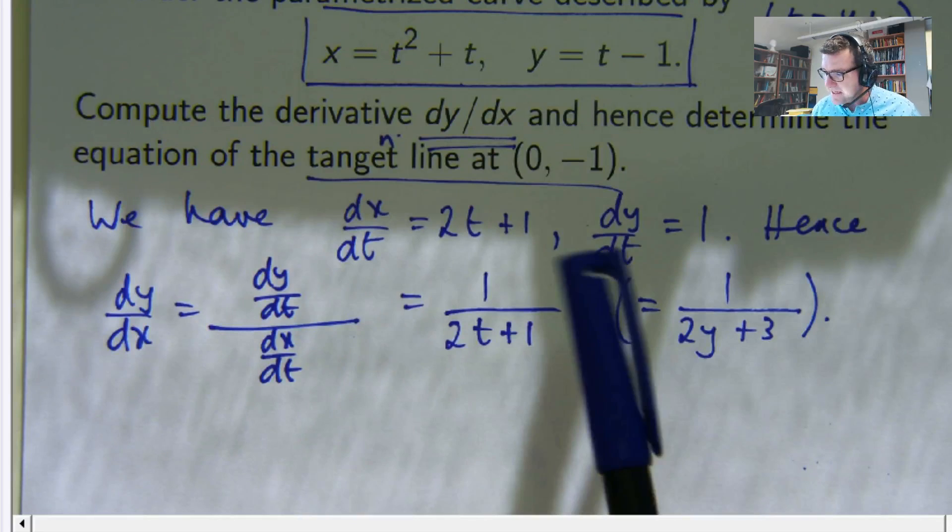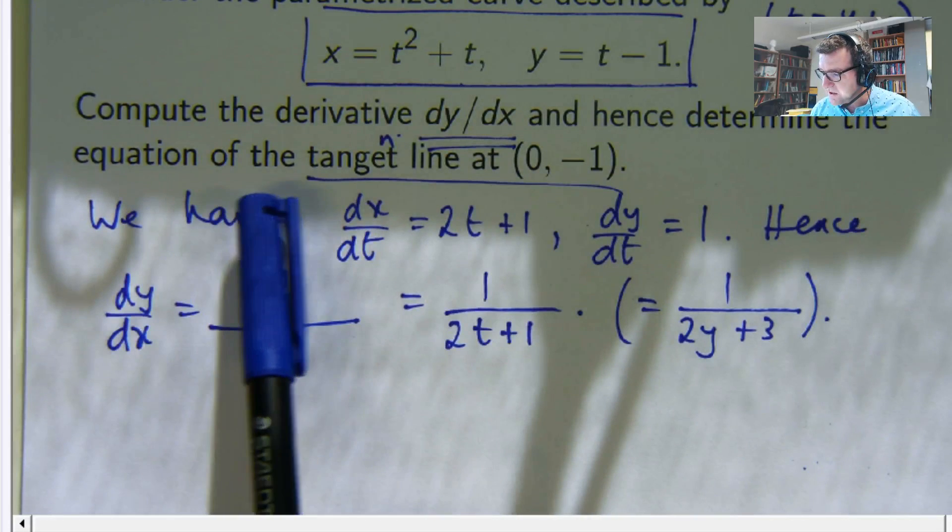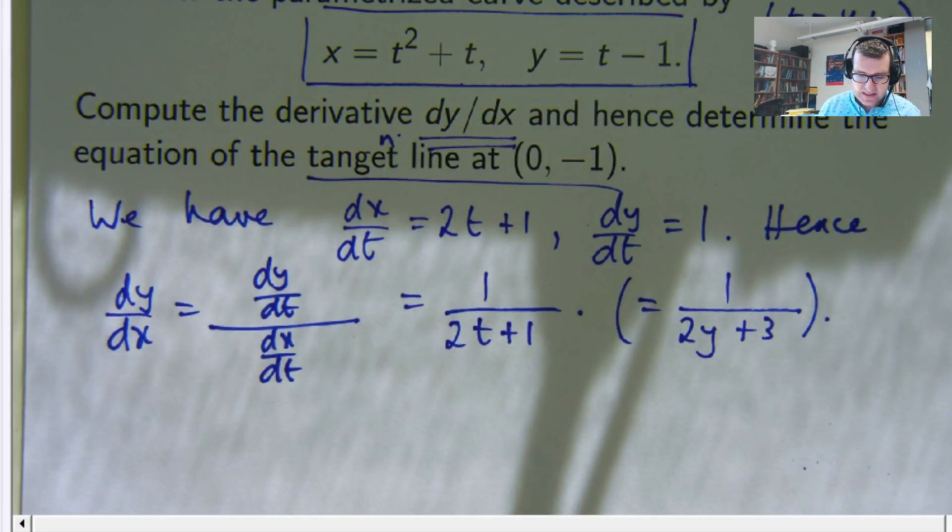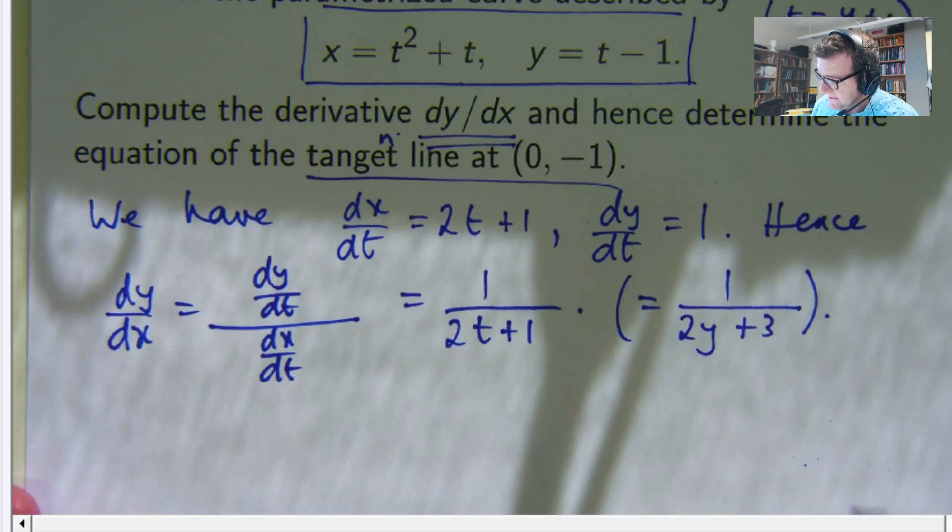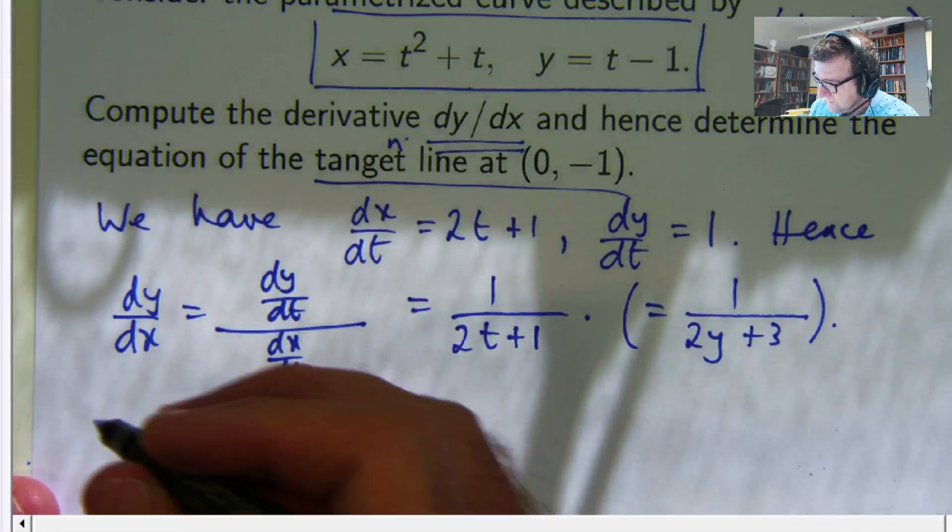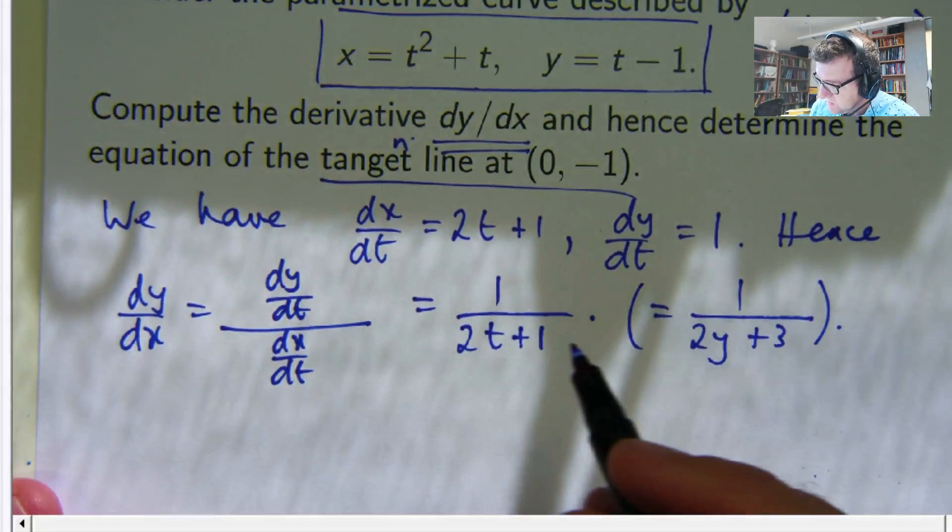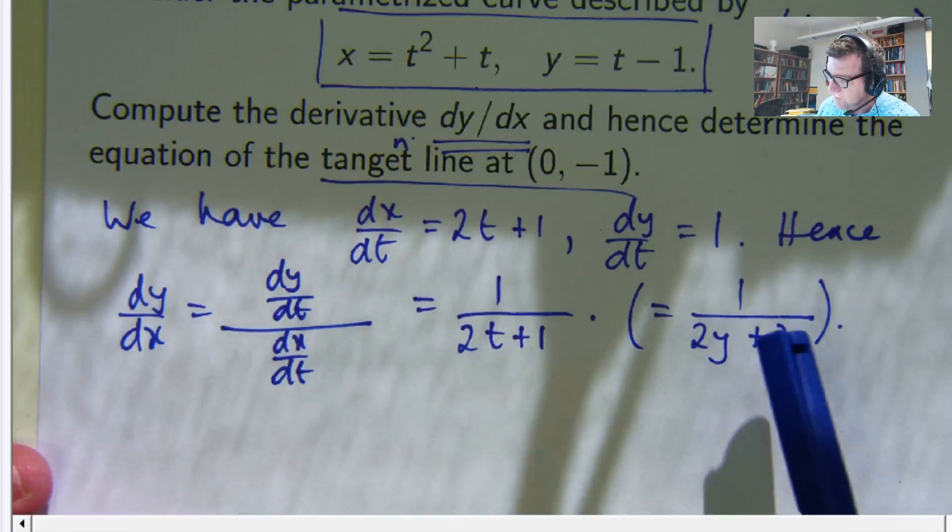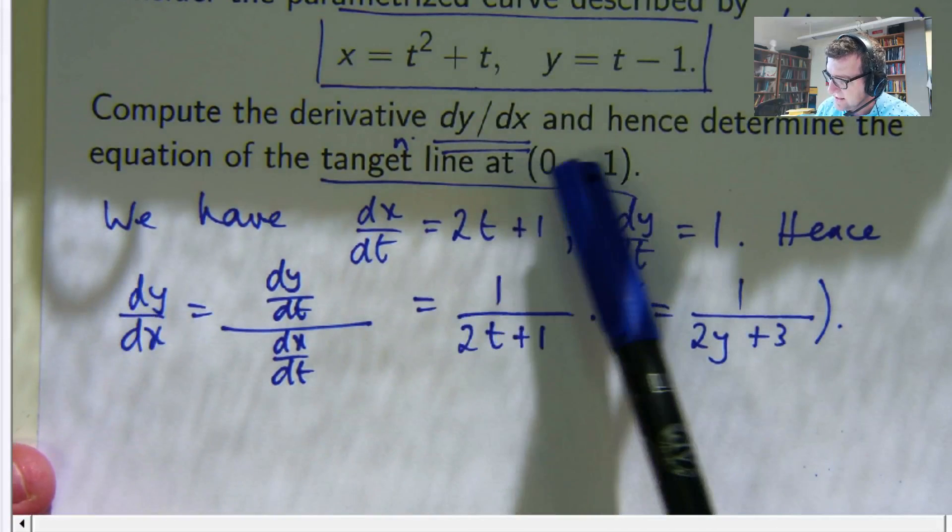Now, the next part is to determine the equation of the tangent line at this point. We're going to use the equation for a tangent. Let's work out what is the derivative at this point.